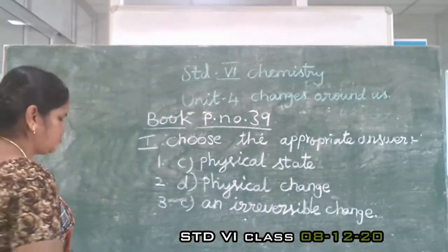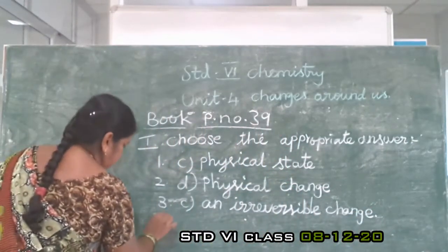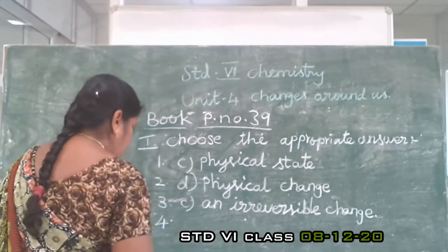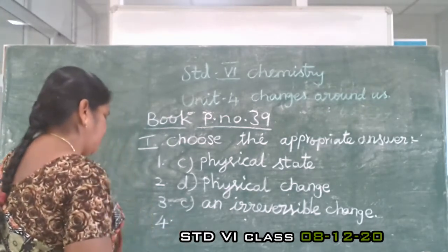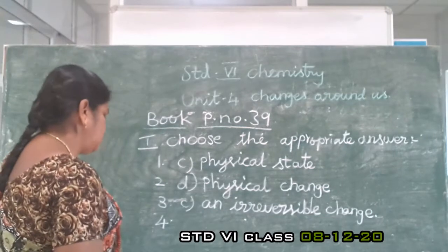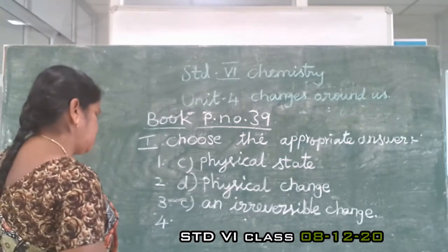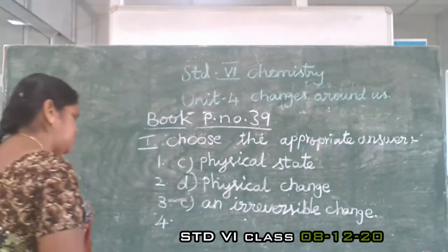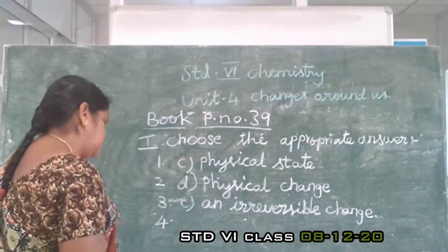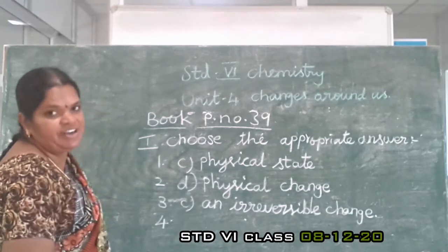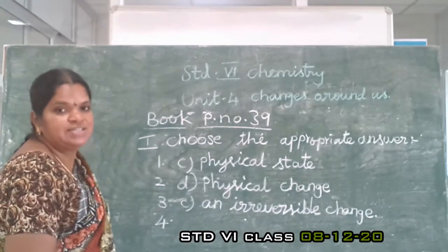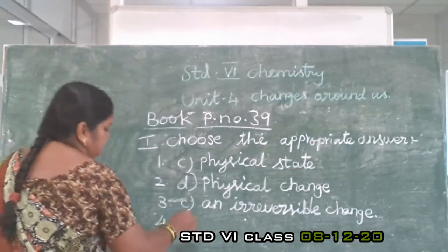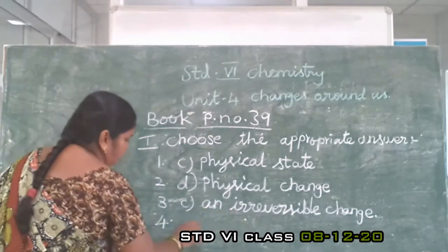Next, fourth question: Out of the following, which is an example of a desirable change — rust, change of season, earthquake, or flooding? Which one is a desirable change? Change of season — option B.